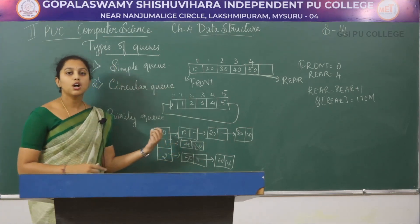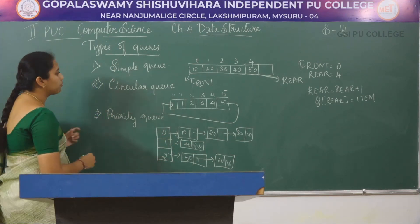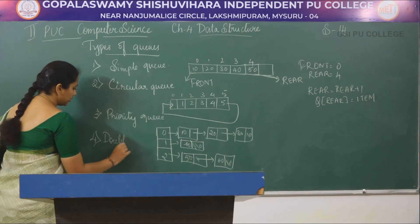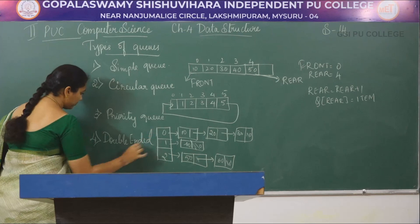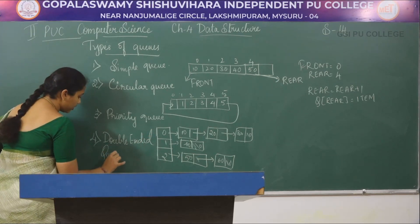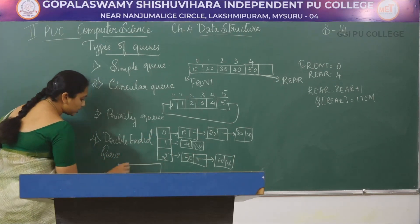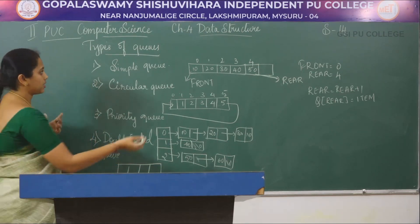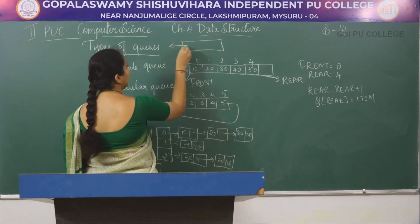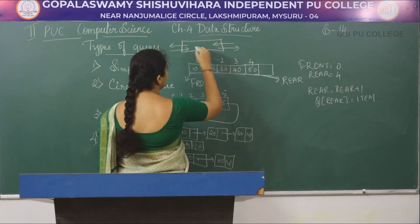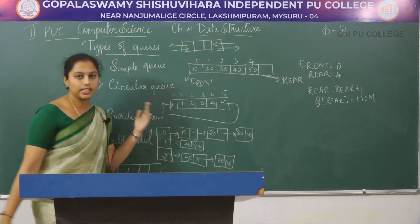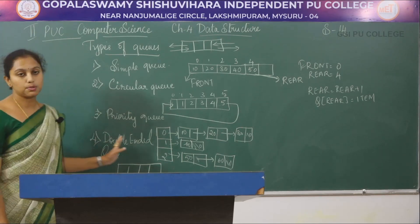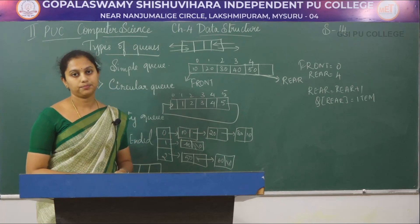The next type of queue is double ended queue, where insertion and deletion of an item takes place at both ends. These are all the four types of queues.